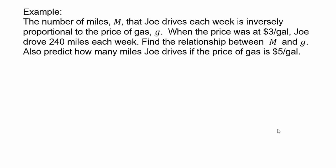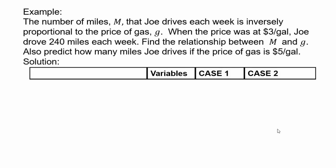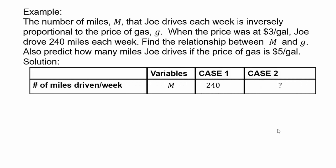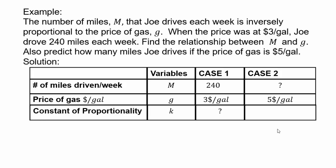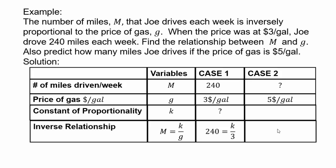Remember, word problems are nothing but equations written in words. That's all it is. So change your mental outlook on what you see word problems as. Let's set up our chart. So we have variables. We have again two cases. m is the number of miles. In first case, it's 240. And in the second case, you are asked to find the m. We have price of gas g. In the first case, it's $3 per gallon. In the second case, $5 per gallon. And then we have the constant of proportionality, which we will find using case one. Use that same value in case two. And then we'll have a relationship that will allow us to solve to get the value in the second case of m.